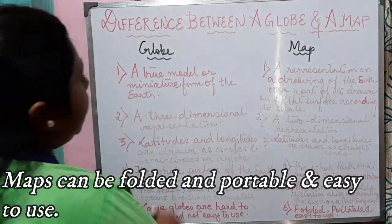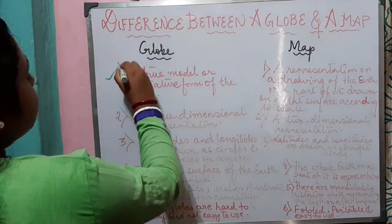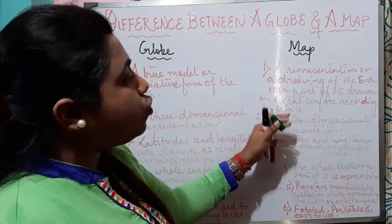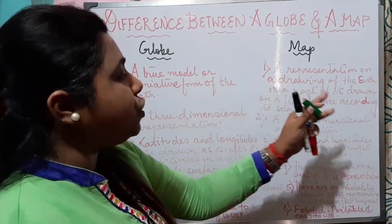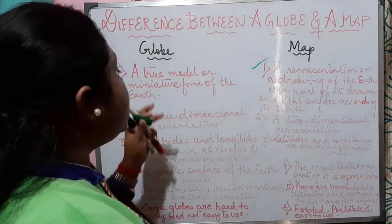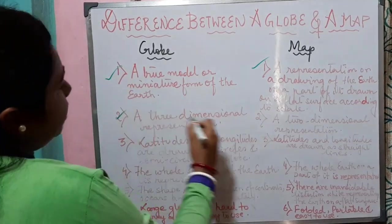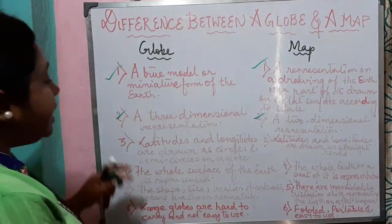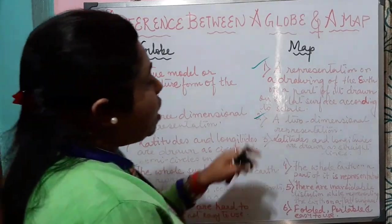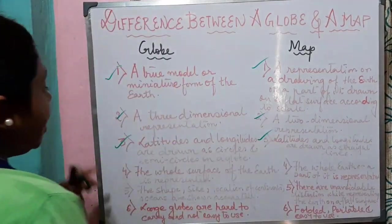To summarize the differences: a globe is a true model or miniature form of the Earth, whereas a map is a representation or drawing of the Earth or a part of it drawn on a flat surface according to scale. A globe is a three-dimensional representation whereas a map is a two-dimensional representation. The latitudes and longitudes are drawn as circles and semicircles on a globe.